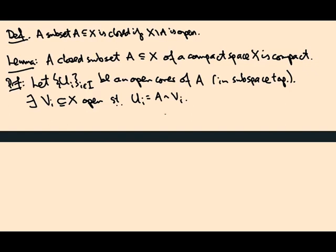Now unfortunately the V_i's might not cover the whole of X, but there's another open set we can add into the mix such that the V_i's together with that open set cover everything. And that is the complement of A, so X minus A is open because A is closed.